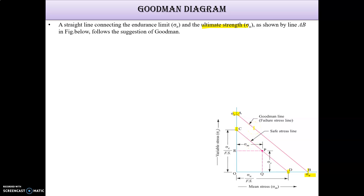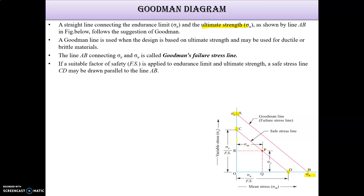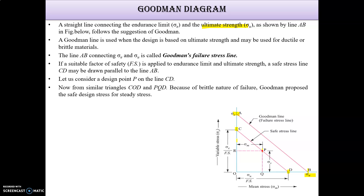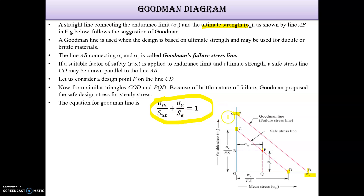Drawing CD parallel to AB gives the safe stress line for the Goodman diagram. Taking midpoint P on CD, projecting onto the y-axis gives point R, and projecting onto the x-axis gives point Q. Thus PQ is Sigma V (variable stress) and RP is Sigma M (mean stress). The Goodman failure stress line is AB.